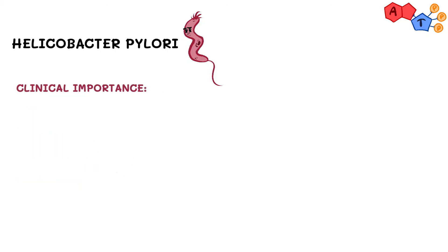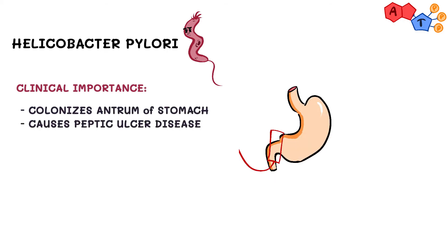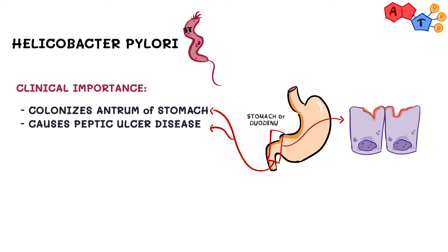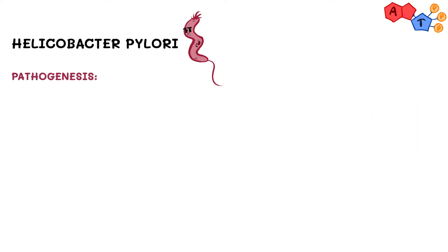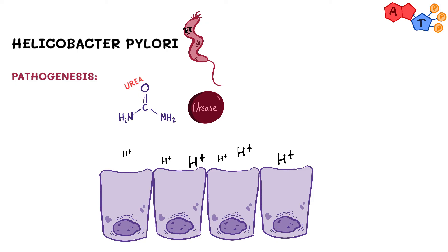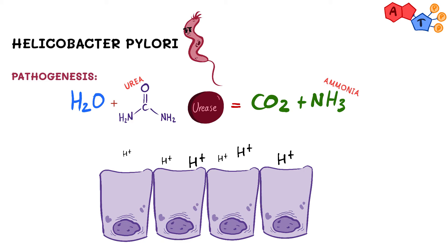For clinical importance, Helicobacter pylori colonizes the antrum of the stomach and can cause peptic ulcer in the stomach and/or the duodenum. It is the most common cause of ulcer in each, but the percentage is much higher in duodenal ulcers. It can also cause gastritis. The urease enzyme is what allows H. pylori to be pathogenic — it breaks down urea in the presence of water to carbon dioxide and ammonia, and the ammonia neutralizes the stomach acidity, allowing H. pylori to survive.